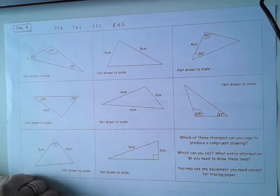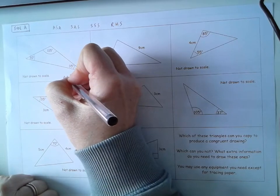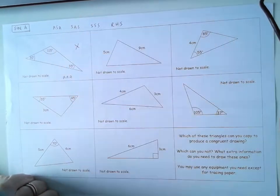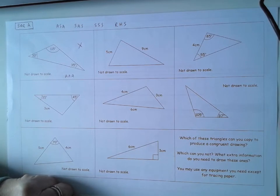So the first one. This one here you can see is angle, angle, angle. That's not enough information. Remember we said yesterday that if we have three angles it tells us the three angles in the triangle but it doesn't give us any indication as to the size of the triangle. So we can't copy that one.